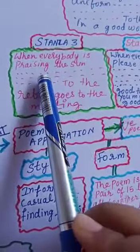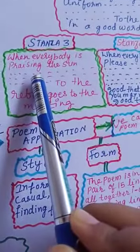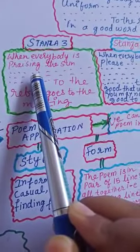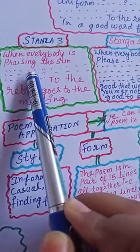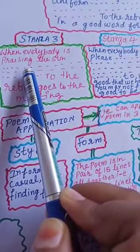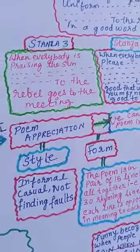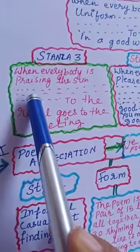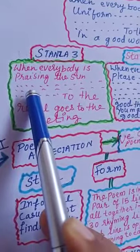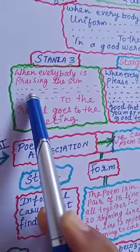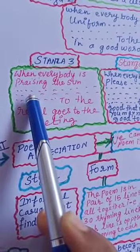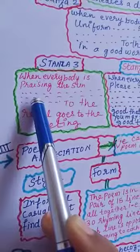Stanza three: When everybody is praising the sun, the rebel remarks on the need for rain. When everybody is greeting the rain, the rebel regrets the absence of sun. When everybody goes to the meeting, the rebel stays at home and reads a book. When everybody stays at home and reads a book, the rebel goes to the meeting.